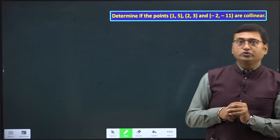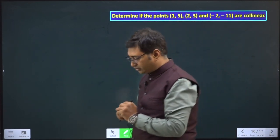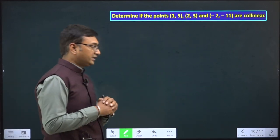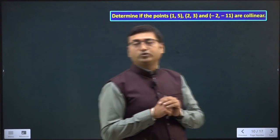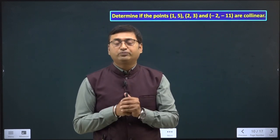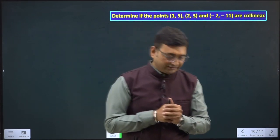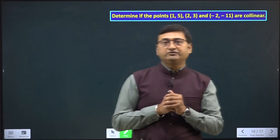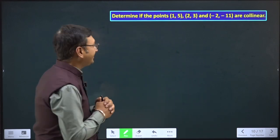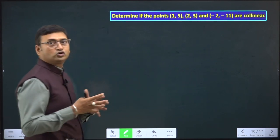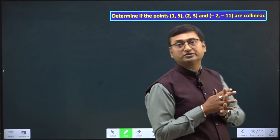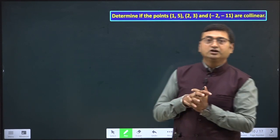First of all, what do you mean by collinear? Collinear means if three or more than three points lie on the same straight line, then they are collinear.